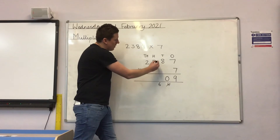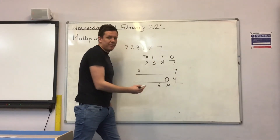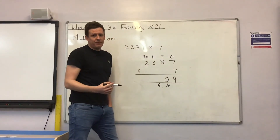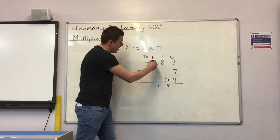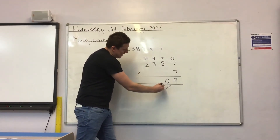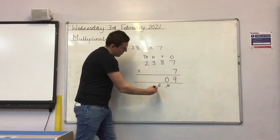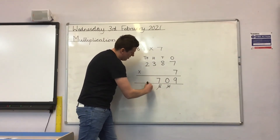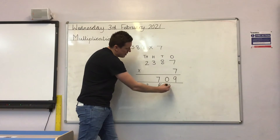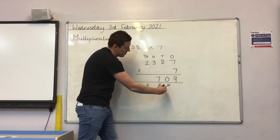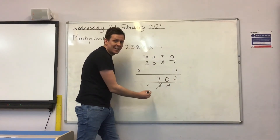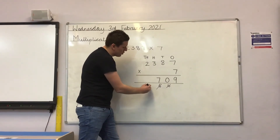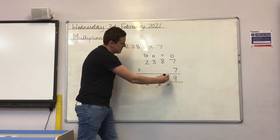Now in my hundreds column, I have 300 times 7. Well, 3 times 7, Year 5, is 21 — so 2100. Add 600 is 2700. Notice how I'm crossing them off as I've used them so that I don't forget to add on the numbers that I've carried. 2700, also 2700.